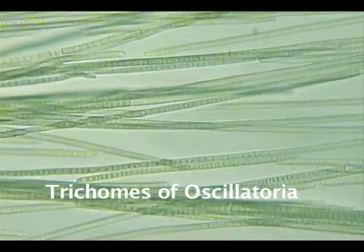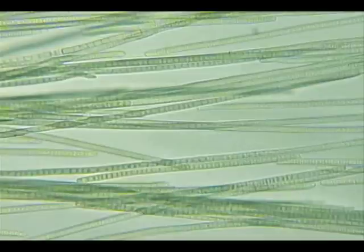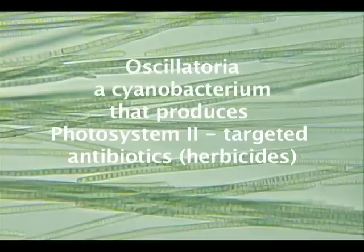We speculate that the cyanobacteria damage plants by producing antibiotics that attack components of the plant's Photosystem II — the exact same target that the herbicides atrazine and diuron inhibit. The cyanobacteria are known to produce these antibiotics, and the antibiotics have been found to inhibit Photosystem II when extracted from the cyanobacteria and applied to plants. The cyanobacteria can be imagined as tiny biological herbicide production machines.